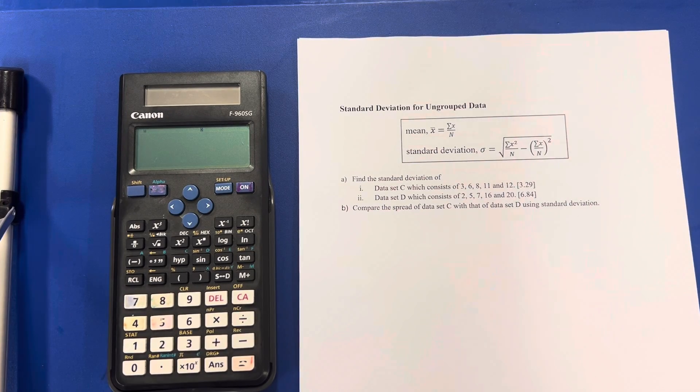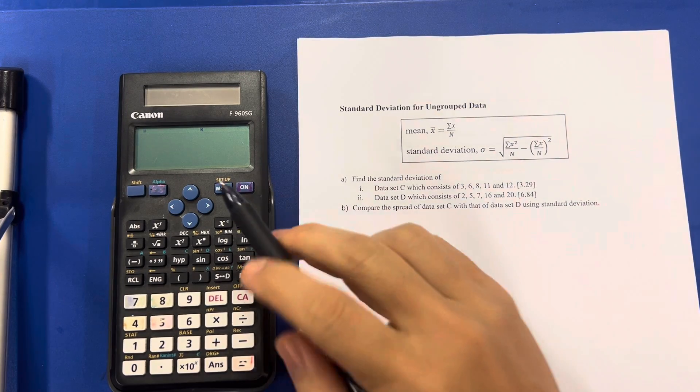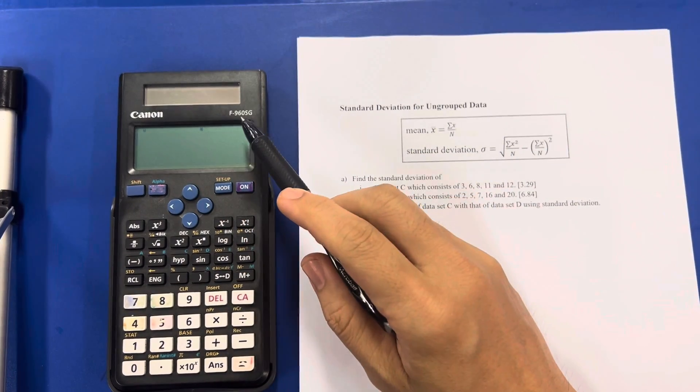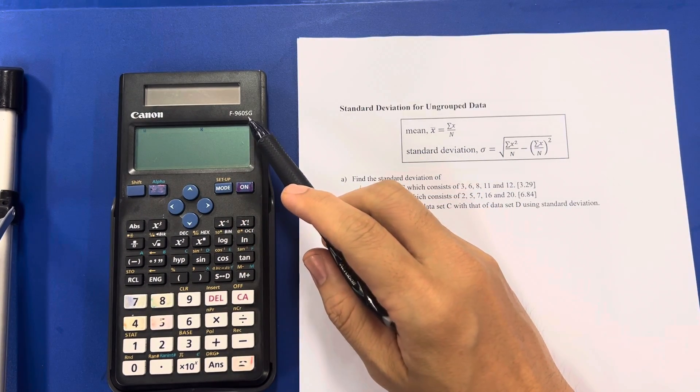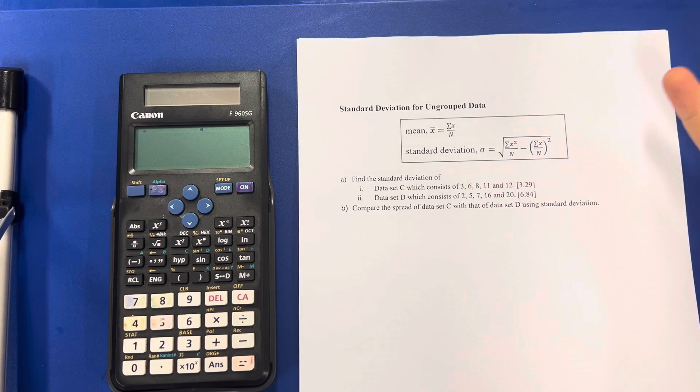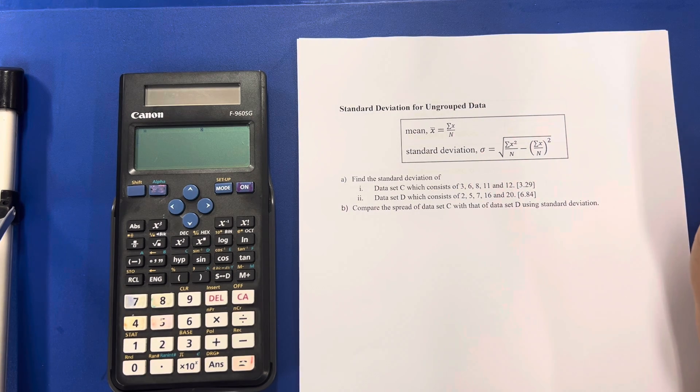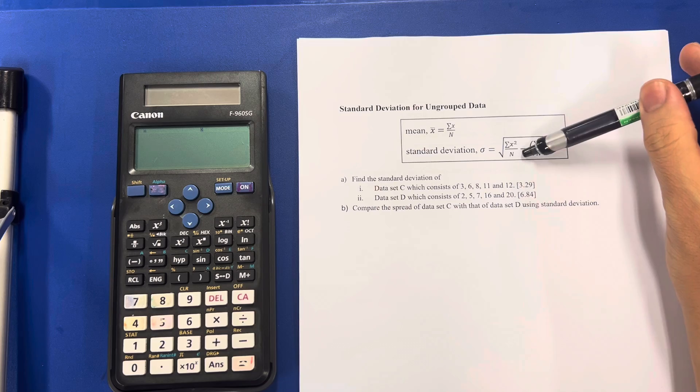Hello everyone, welcome to this video where we are going to make use of this calculator, Canon F960SG, to help us to find standard deviation. Alright, so this is where the formula is.